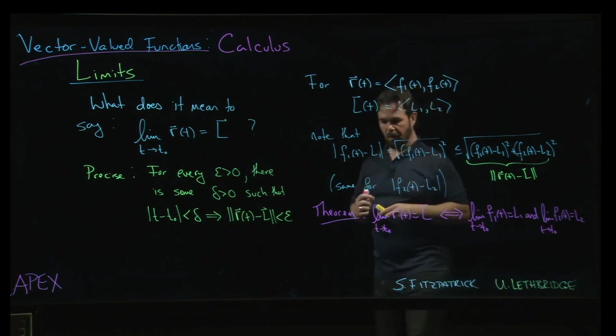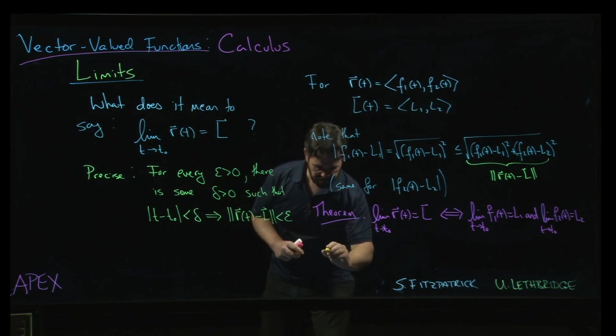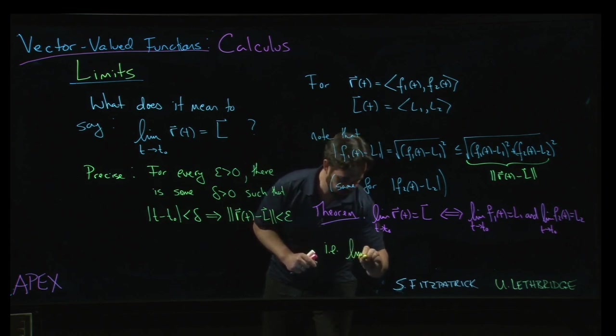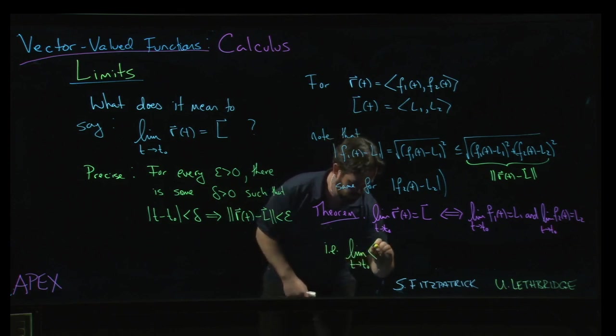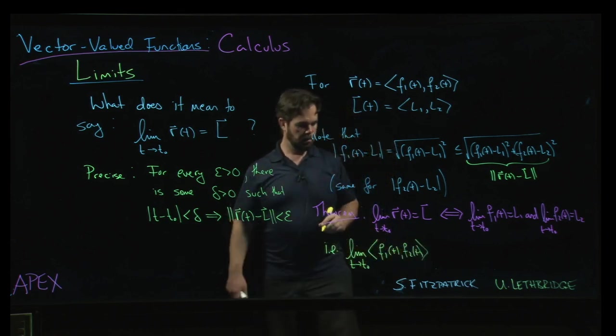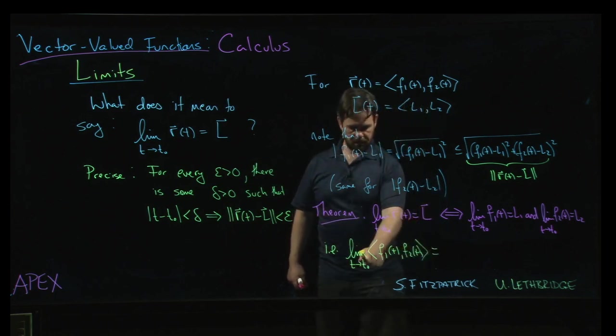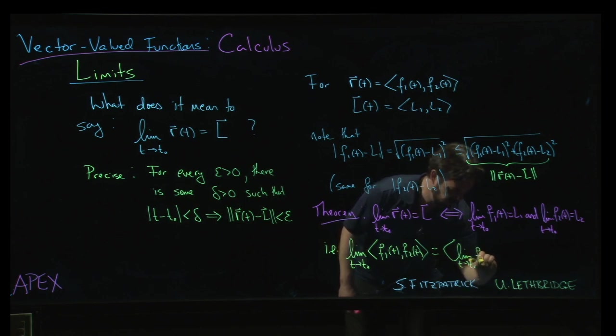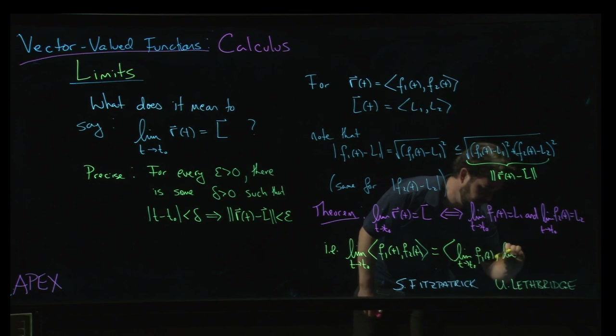Alright. But wait, there's more. We can do one more thing. Another way of rephrasing this theorem is to say the following: What we're really saying here is that the limit as t approaches t0 of r(t), which is <f1(t), f2(t)>, to take the limit of this vector-valued function, I can just take the limit component-wise. This is equal to the limit as t approaches t0 of f1 in the first component and the limit as t approaches t0 of f2 in the second component.